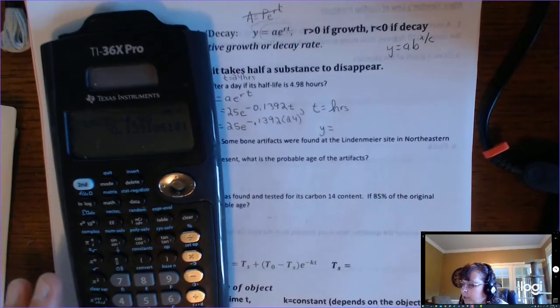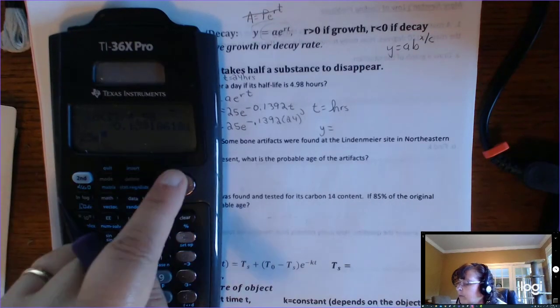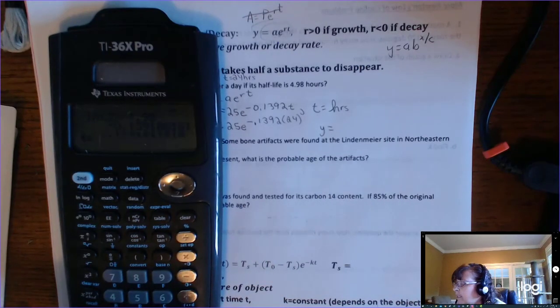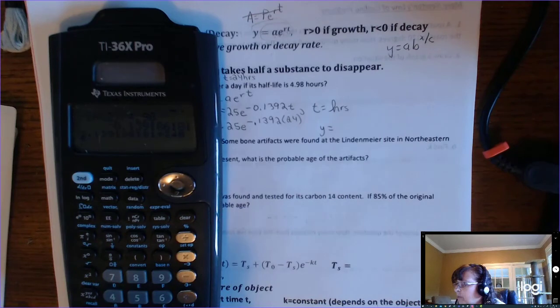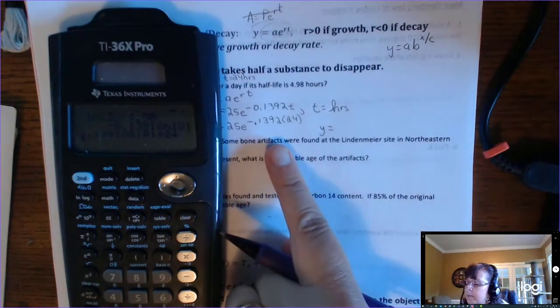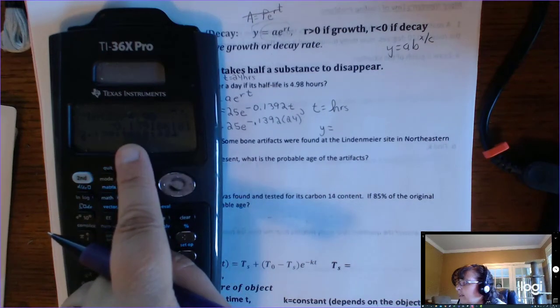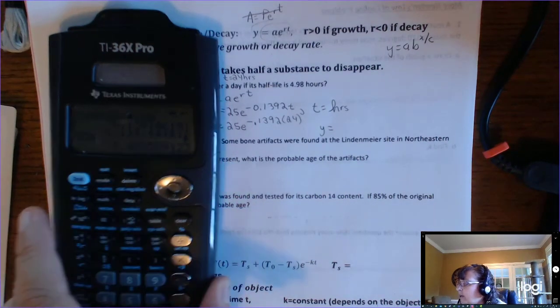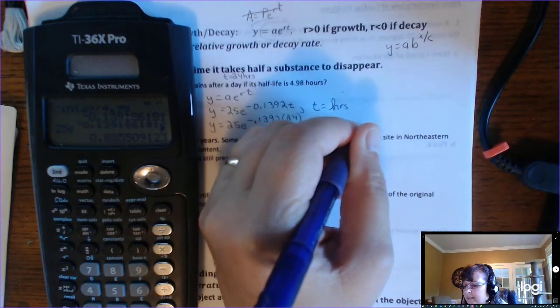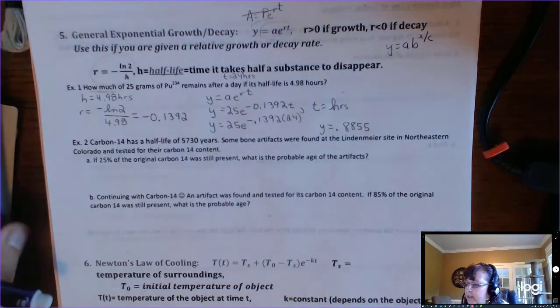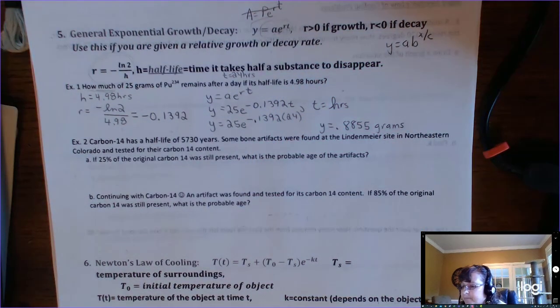So we will plug in 24, and we'll figure out what Y is. Okay, so 25, this E button raised to this. So I'm not going to get a rounding error because instead of typing in negative 0.1392, I just went and got the unrounded R in there, and now I'll round. So Y equals 0.8855, and the units are grams. That's how much will be left after a day.